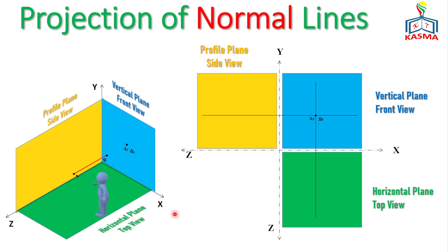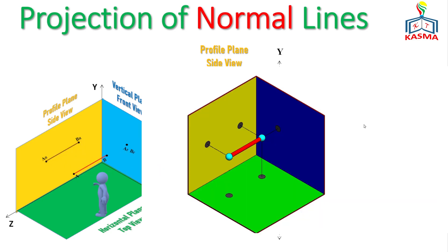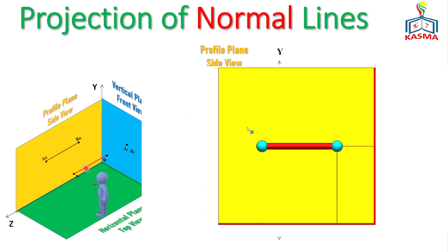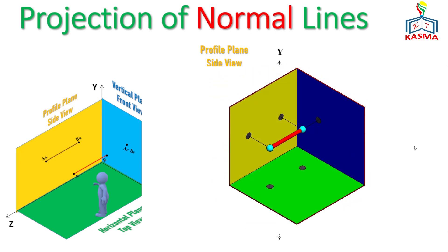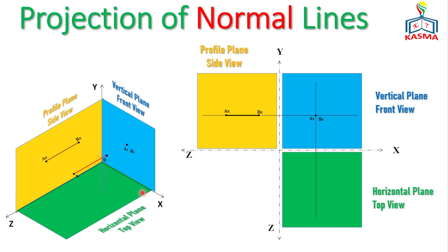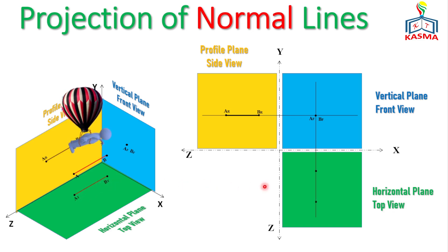When looking from the right side view direction, the line projects so that point A is placed here and point B is here. Connecting them gives the exact length of the object — the projection length is the same size as the given object. For the top view, the line projects onto the horizontal plane, with point B and point A each projected, and connecting them gives the top view projection.